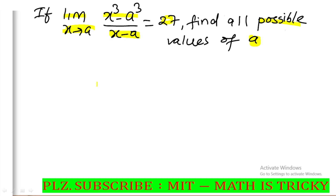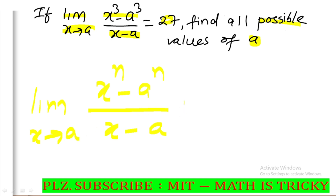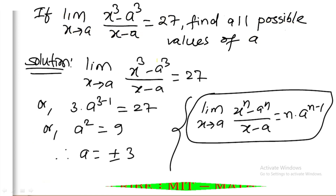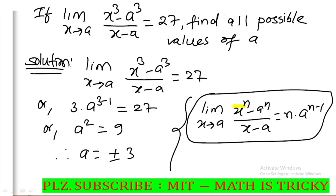We will see the formula: the limit as x tends to a of (xⁿ minus aⁿ) divided by (x minus a) equals n into a to the power n minus 1. We will apply this formula to the left-hand side and simplify.